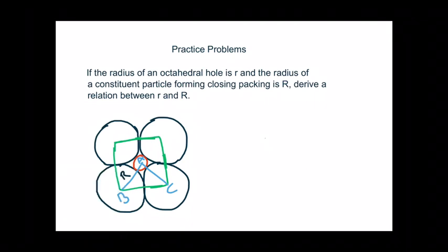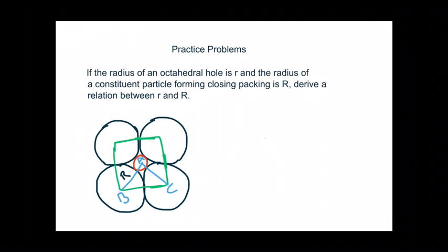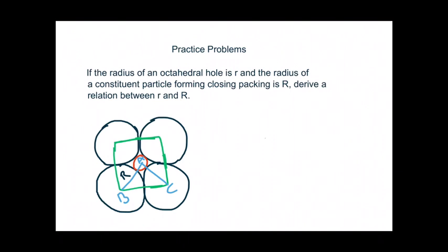Here I have tried to draw the constituent particles forming the close packing — the larger spheres. Four larger spheres are there and you can see the void inside. The octahedral void is formed by six spheres: three from the first layer and three from the second layer, but here for convenience I have drawn only four spheres. Inside the octahedral hole there is a constituent particle which can be a cation.